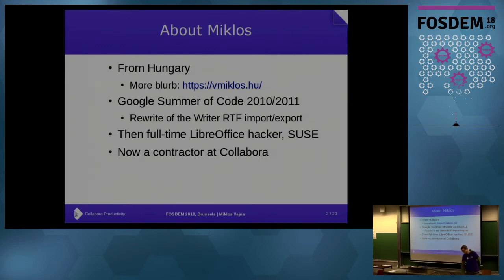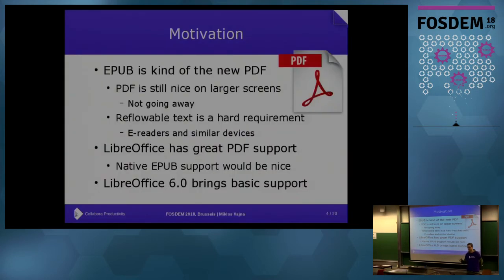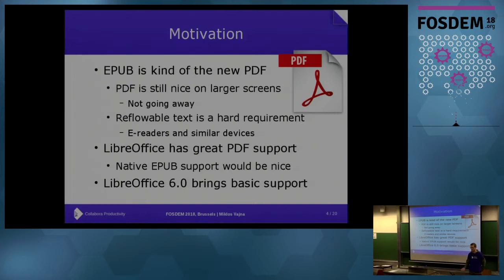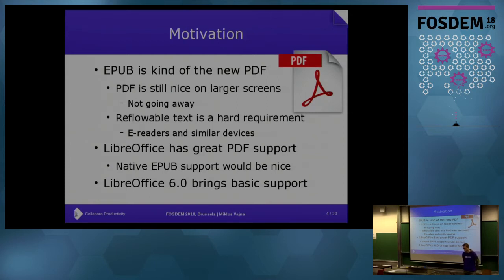I keep mentioning LibreOffice, but this is a Writer export filter — so far it is only limited to Writer. Why do we need one more export filter, making the LibreOffice code base even more bloated? The motivation is that if you have a mobile phone, tablet, e-reader, or something with a small screen, then EPUB is kind of the new PDF for your use case.